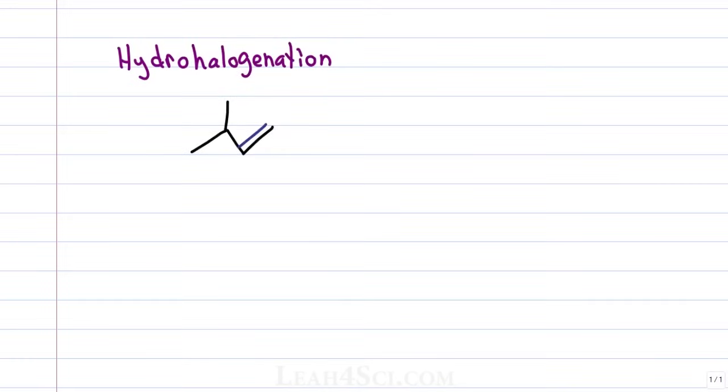The next reaction is hydrohalogenation. This comes from hydro meaning hydrogen and halogen meaning X. You'll see this reaction written out as HX for example, HCl, HBr reacting in some inert catalyst and some of your professors won't even show that.